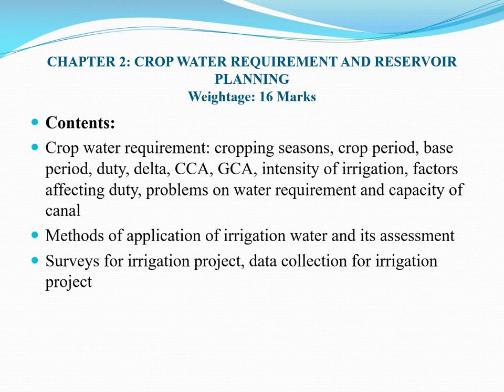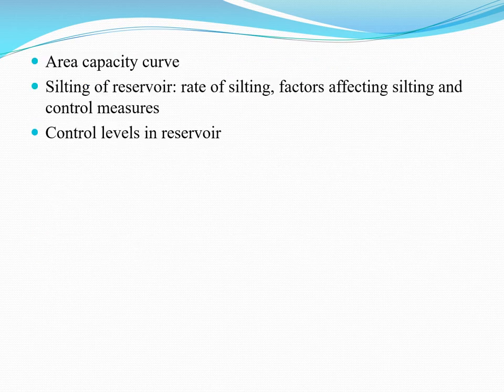The syllabus also covers methods of application of irrigation water and its assessment, surveys for irrigation projects, data collection for irrigation projects, area capacity curve, silting of reservoir including the rate of silting, factors affecting silting, control measures, and control levels in reservoir. This is the syllabus contained in Chapter 2.